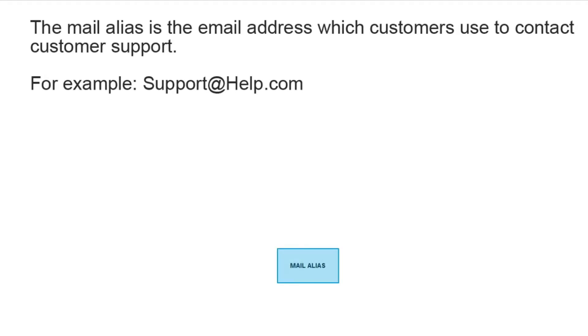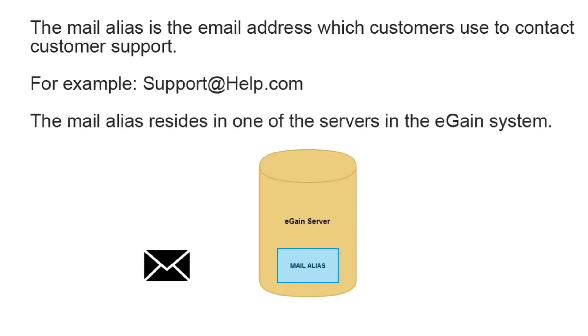Let's break it down a little more. The mail alias is the email address which customers use to contact customer support — support at help.com, for example. This alias resides in one of the servers in the eGain system.